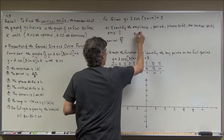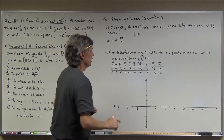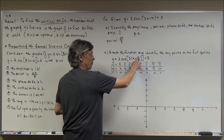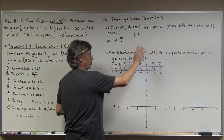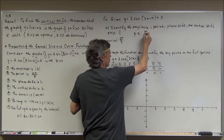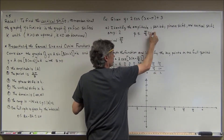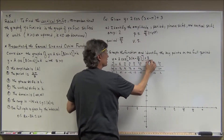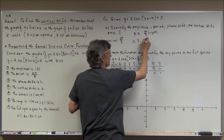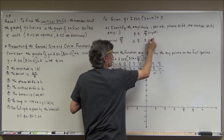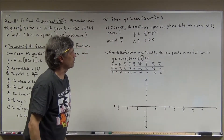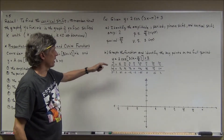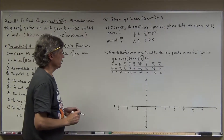The phase shift is π/3. It's in the form x minus π/3, so π/3 is positive — it goes to the right. You can say π/3 or π/3 to the right. The vertical shift is the plus k on the end, which is plus 3, and since it's a positive 3 it goes upward.